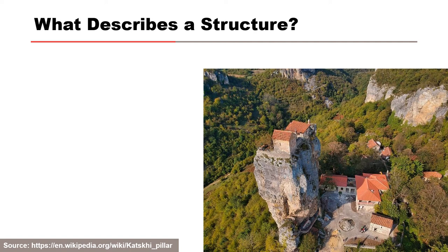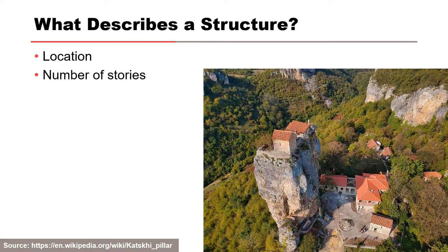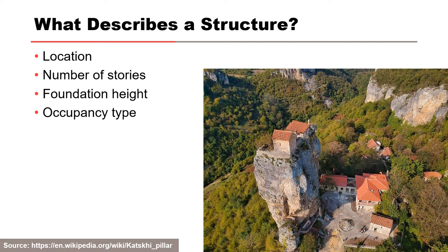What describes a structure? Location is a big one — if you don't have the structure's location, you're going to have a hard time doing the consequence assessment. Number of stories, foundation height, occupancy type. Occupancy type is a way to aggregate common features of structures so you don't have to define these features for every single structure. You can say this structure is a single-family residential structure and all single-family residential structures are going to have these similar attributes.